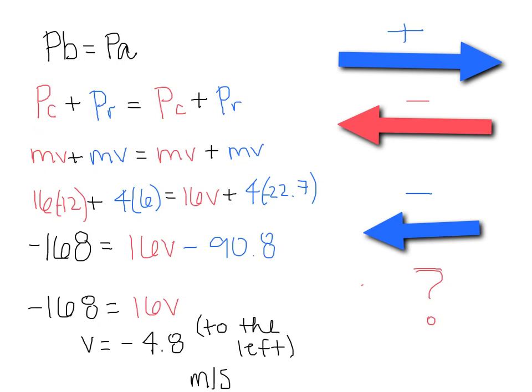Now you're just going to plug in the numbers. 16 times negative 12 plus 4 times 6 equals 16v plus 4 times negative 22.7. These numbers are negative because they are moving in the negative direction.